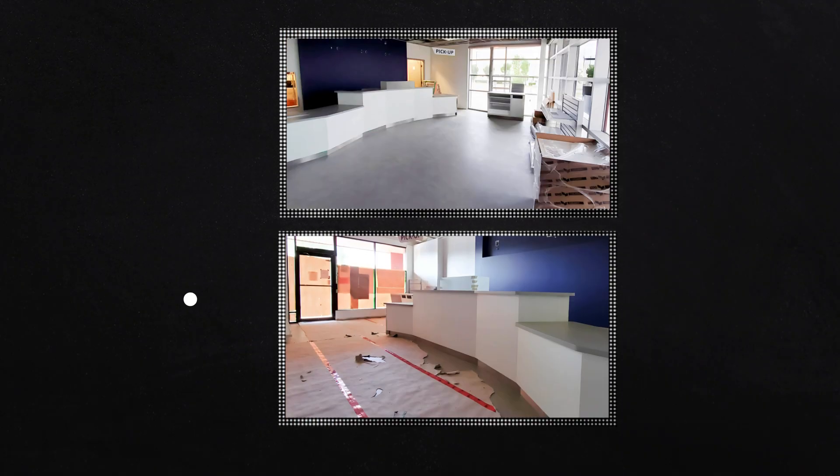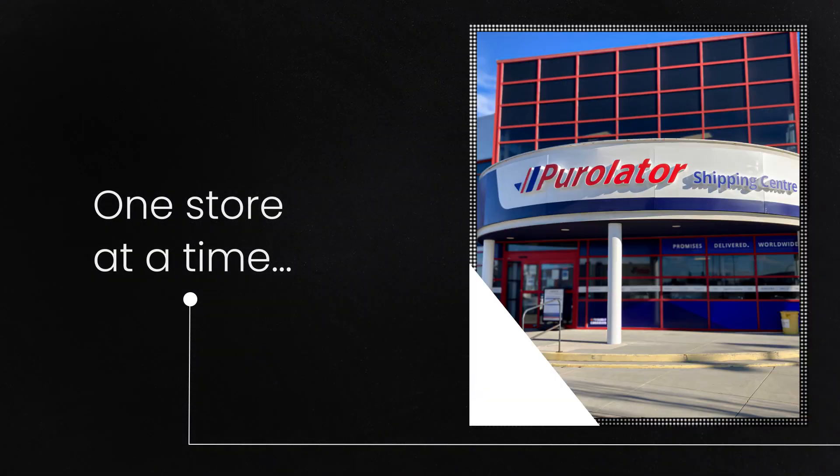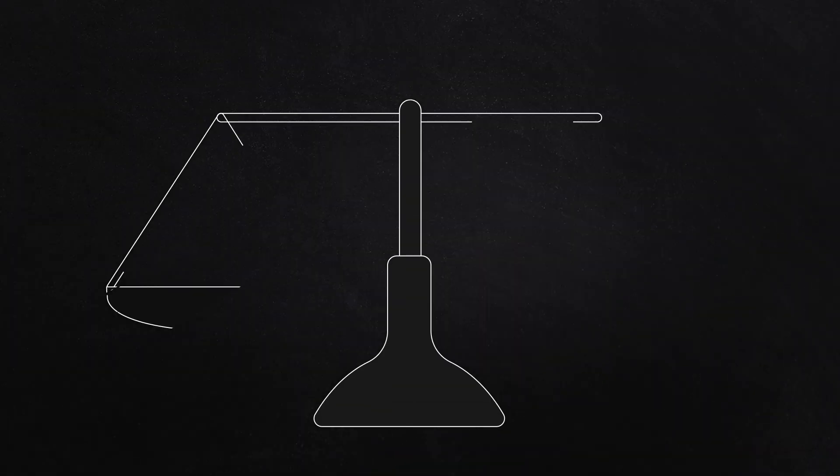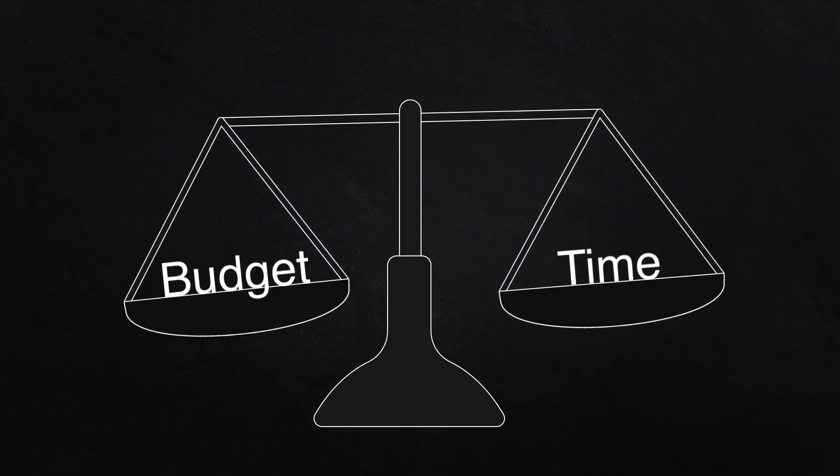And when a retailer moves from refreshing one store at a time, as Purolator did for five years, to a 20 store national refresh, economies of scale can make or break a project's budget and timelines.